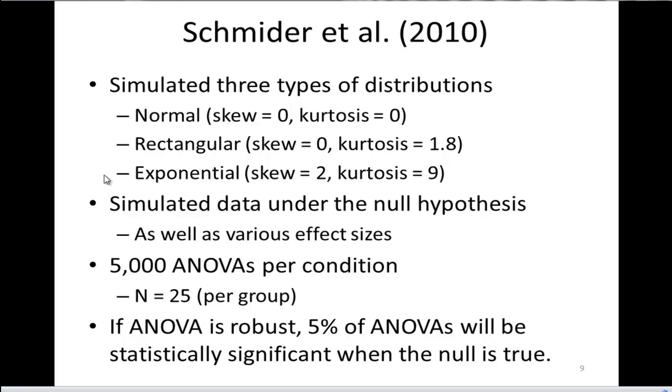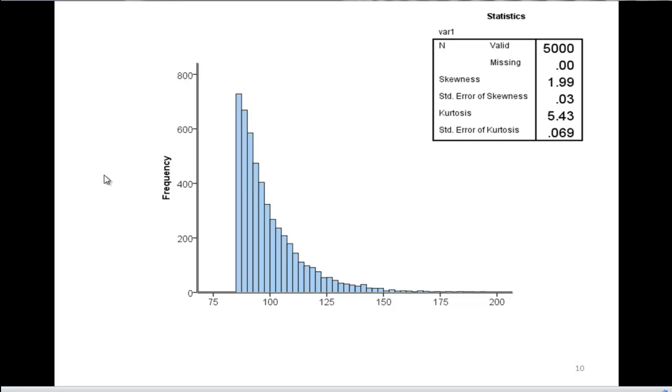If the ANOVAs are robust, 5% of ANOVAs will be statistically significant in the null hypothesis condition. So what did Schmider et al. find?